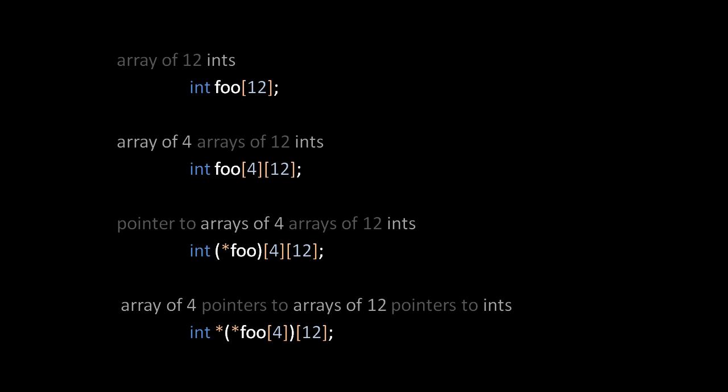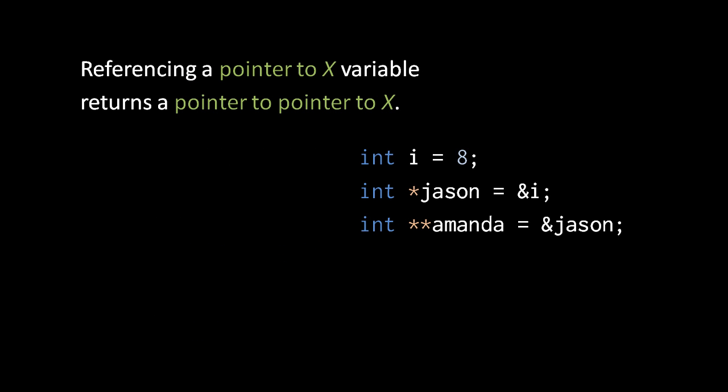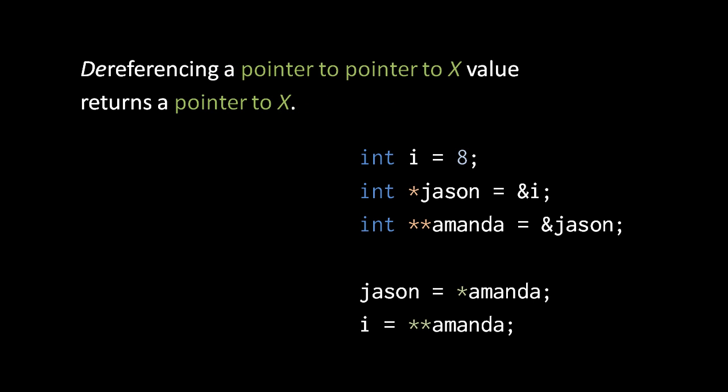The general pattern of declaration syntax is that we start with a name and read the modifiers inside out, going by order of precedence, except where parentheses intervene. As for actually using these complex types, we need to cover a few rules. First, referencing a pointer type variable will return a pointer to that type. Here we assign the reference of int variable i to pointer-to-int variable json, then assign the reference of json to pointer-to-pointer-to-int variable amanda. When dereferencing a pointer to pointer to x, we get back a pointer to x value. If we use the dereference operator on amanda twice, we get back a plain int value.